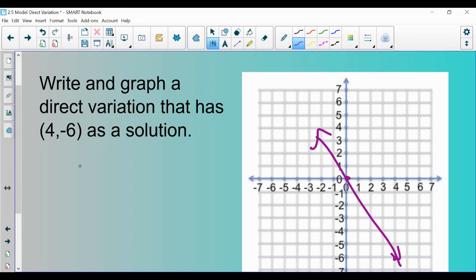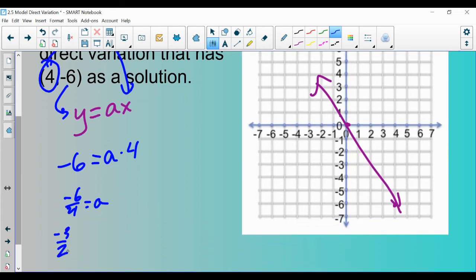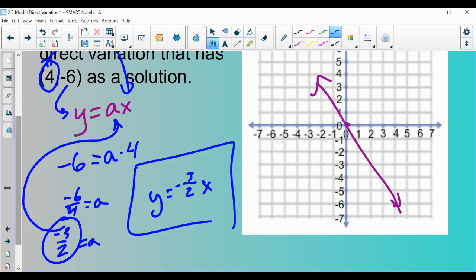We also are going to have to write the equation. Remember, direct variation means it can be written like y equals ax. Well, I don't know what a is. That's what I need to figure out, right? Once I know what the a value is, I'm done. That's my constant of variation. I just write it in and I have my answer. To find the constant of variation, take the x value and plug it in for x, and the y value and plug it in for y, and solve for a. That would give us negative 6 is equal to a times 4. I'm trying to solve for a here, so I'm going to divide both sides by 4 and get negative 6 over 4, which is negative 3 halves. So my equation is y equals negative 3 halves x. Once you have the a value, just plug it in and you have your answer. So this is the equation and that's the graph.